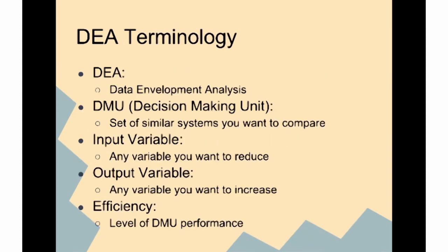Some terminology you need to know: DEA stands for Data Envelopment Analysis. DMU is a Decision Making Unit - a set of similar systems you want to compare. Input variables are any variables you want to reduce, and output variables are any variables you want to increase. Efficiency is the level of DMU performance.